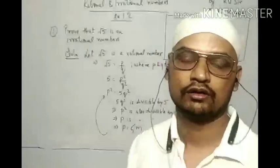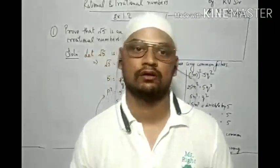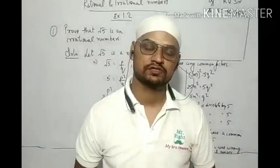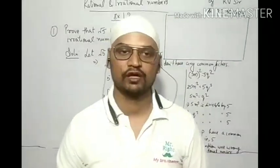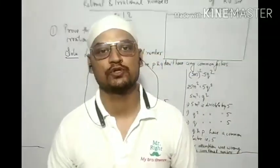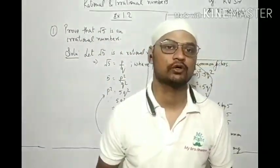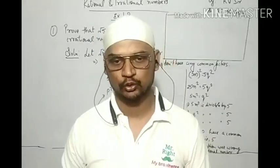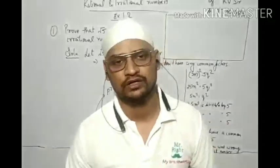Hello everyone. Let us move to our second exercise where we have to discuss irrational numbers. In the first class we discussed that any number that can be represented in p upon q form is known as a rational number. Numbers like 2, 3, 5, 5 upon 1, and 5 upon 3 are all rational numbers.